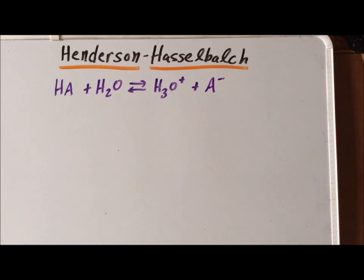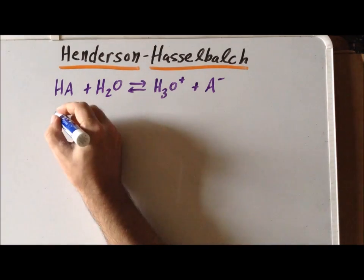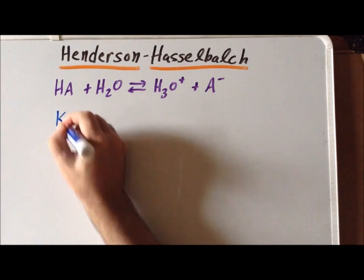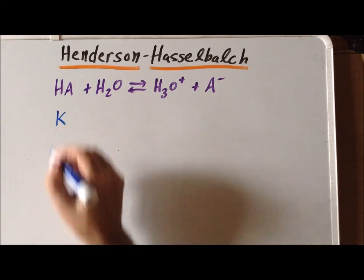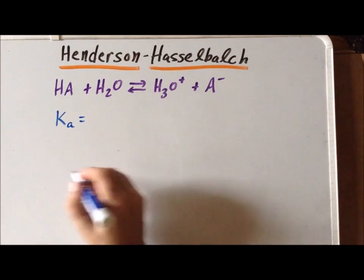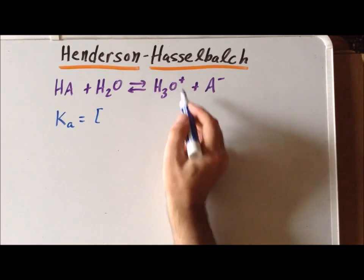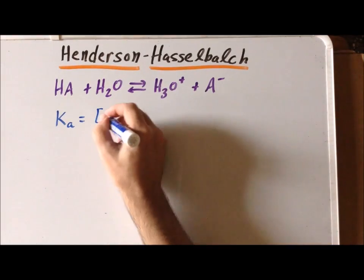We can write the equilibrium constant for this reaction as follows. We give this equilibrium constant a special name of K sub A. Recall that we write the products in the numerator.